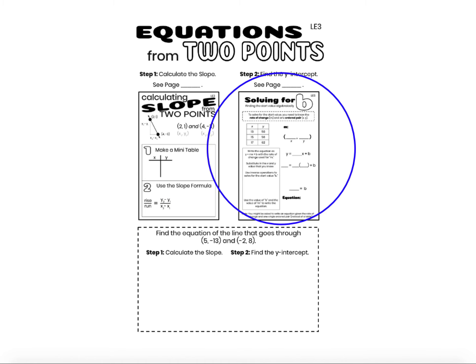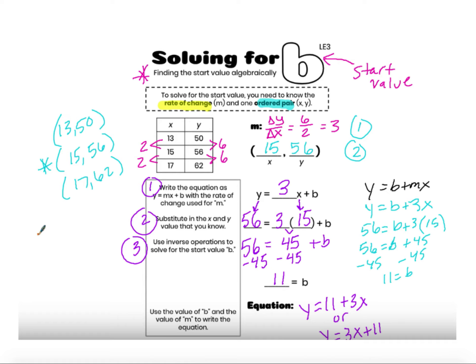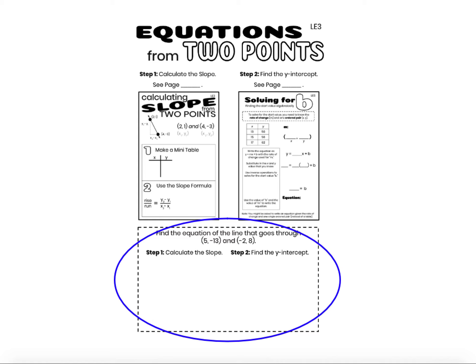The second thing you need to do is once you have that slope or rate of change, you need to solve for the start value, so algebraically solving for b. So you plug in the rate of change, you plug in an ordered pair, one of the two ordered pairs, and you solve for the start value. In this example at the bottom I'm going to go ahead and do both of those things, but again if you need more information on either calculating the slope or solving for the start value, then you can find those two pages in your toolkit.